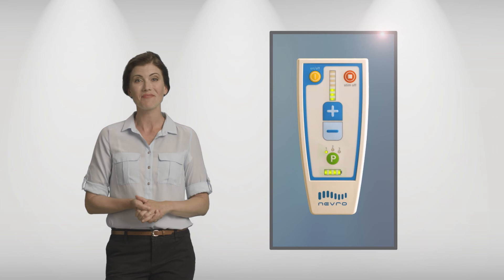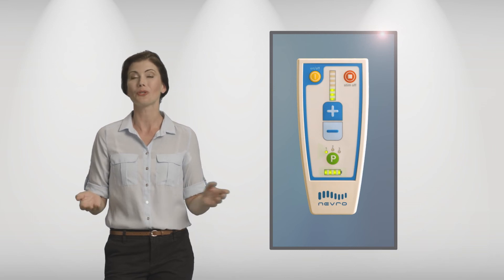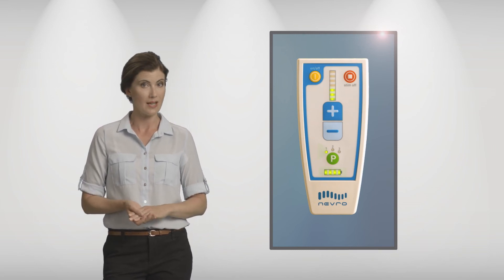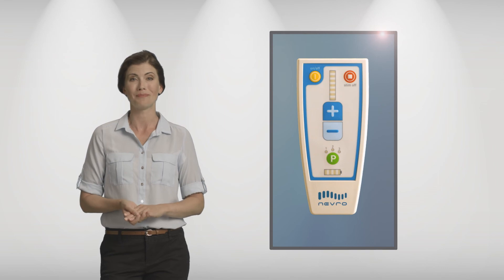Once everything looks correct, you can simply turn off the remote by using the yellow button or set it aside and it will go to sleep on its own. Your therapy will remain on even if your remote is off. Remember, the red button will turn your therapy off.